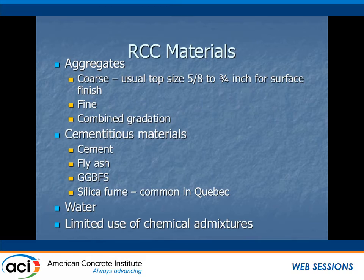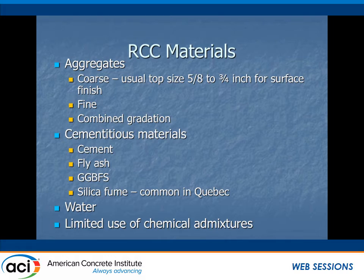The document provides guidance on properties and materials. For RCC left as a final surface texture, we generally use smaller coarse aggregate sizes for better surface texture — five-eighths or three-quarter inch — with a little less coarse aggregate and a little more fine aggregate. Some projects, like the Honda project, used a combined gradation supplied by an aggregate manufacturer. RCC can use all kinds of cementitious materials: cement, fly ash, slag cement, silica fume — common in Quebec. To date there hasn't been a lot of use of chemical admixtures or fiber, though I think they might provide opportunities to enhance RCC.